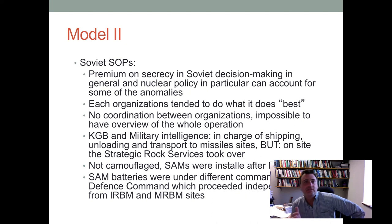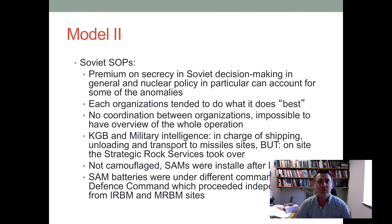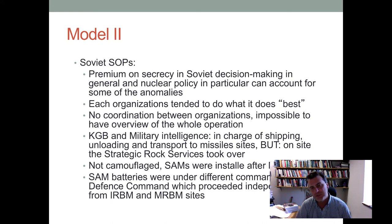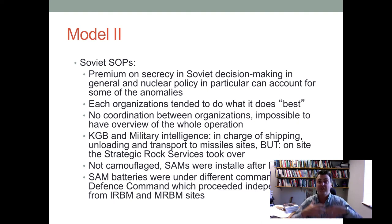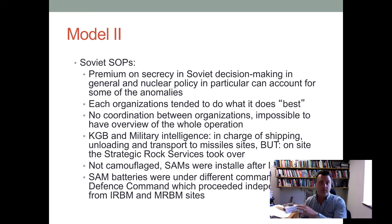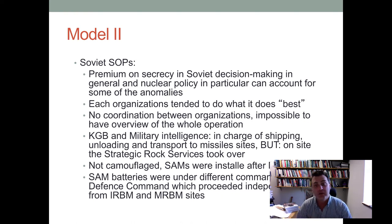Some of the Soviet SOPs placed a huge premium on secrecy. Obviously you want to shield your secrets from the Americans, but even within the political and military establishment, nobody really was in charge of what was happening. A very good example of this lack of coordination between different services — KGB and military intelligence — is that they were in charge of shipping and unloading the missiles, but once they were in Cuba on site, the strategic rocket services took over. The surface-to-air missiles were installed after the medium-range ballistic missiles, and those SAM batteries were under a different command — Air Defense Command — which proceeded independently from the IRBM and MRBM side.